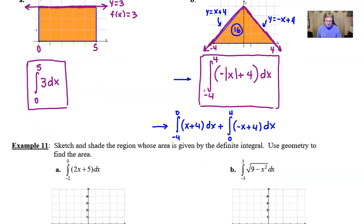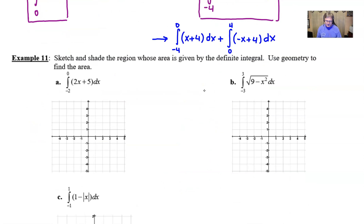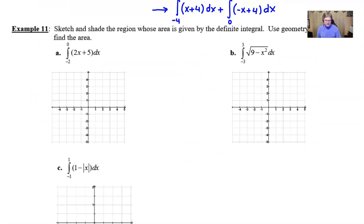Let's take a look at number 11 here. I want to do two examples in this particular video because they're so similar. This is basically backwards. In this particular case, I want you to sketch and shade the region whose area is given by the definite integral, and then it does say to use geometry to actually find the area.